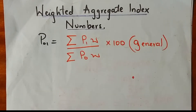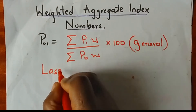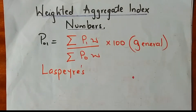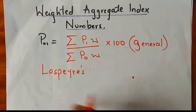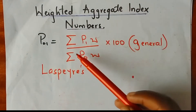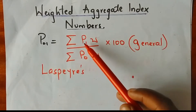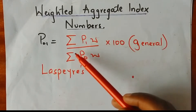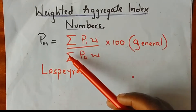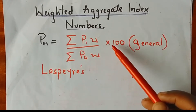There are many weighted aggregate index numbers, but we are going to discuss three of them: the Laspeyres index number, the Paasche index number, and the Fisher's Ideal index number. The general expression of a weighted index number is: weighted aggregate equals the summation of P1 — the prices at the current year — multiplied by a given weight, divided by the summation of the price at the base year multiplied by a given weight, then multiplied by 100.